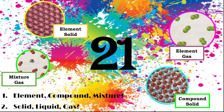For A, we can see that it is an element because it is all the same atom, and we can see it is a solid because the atoms are structured closely together.